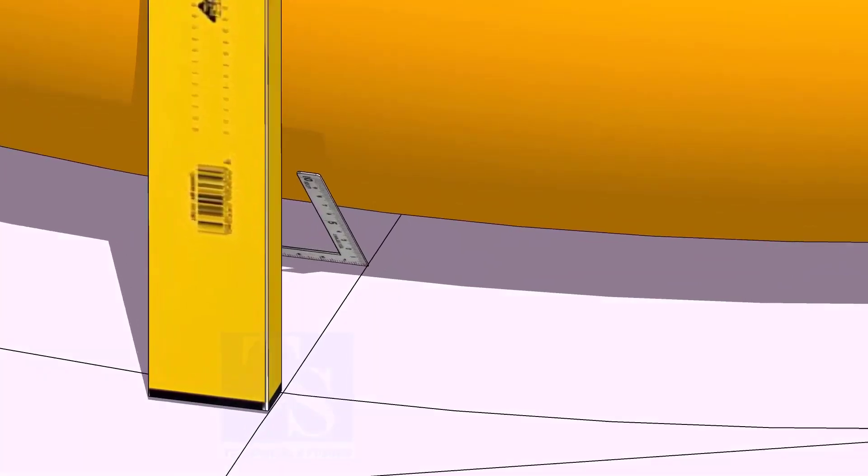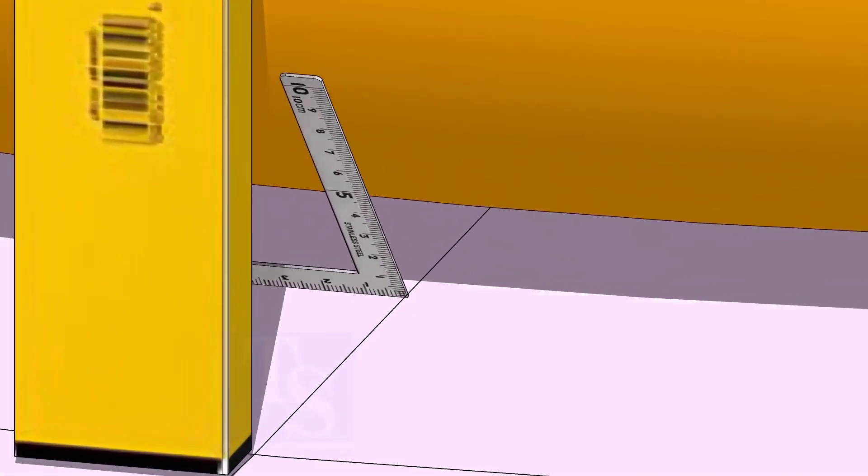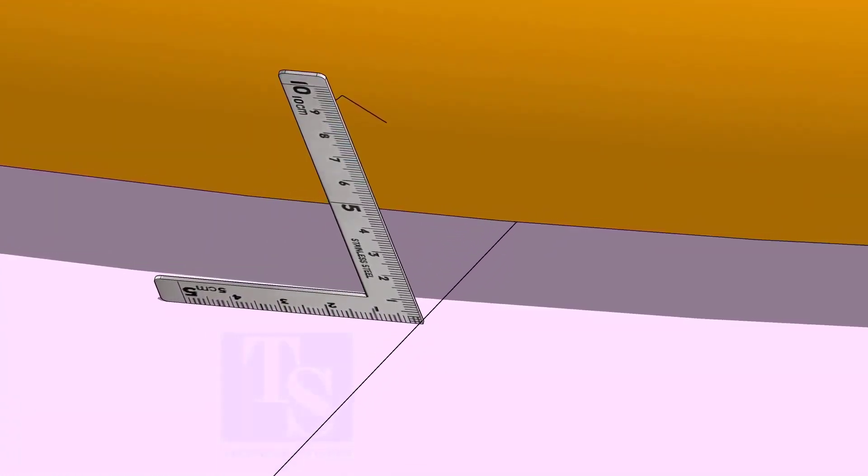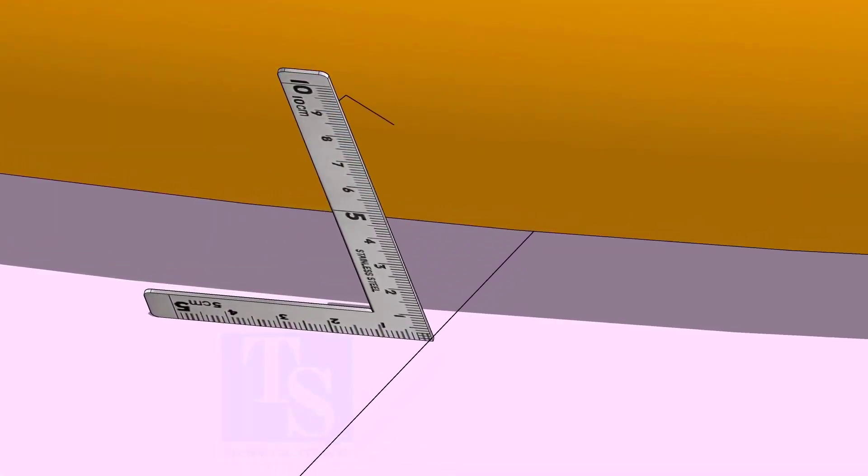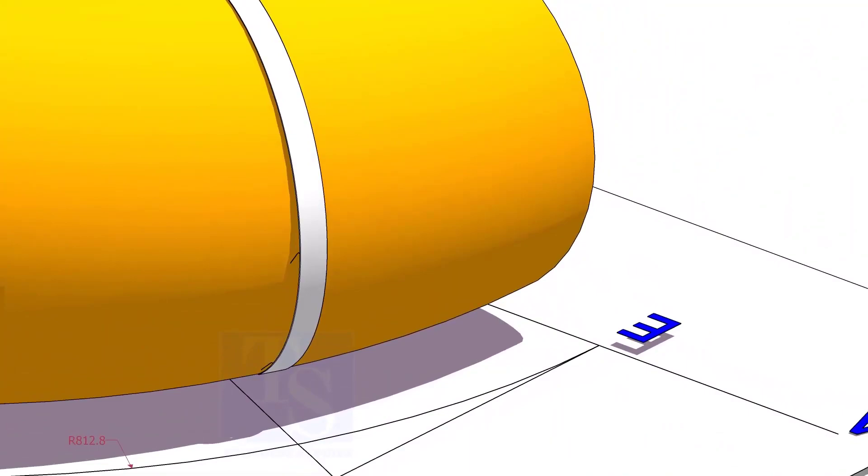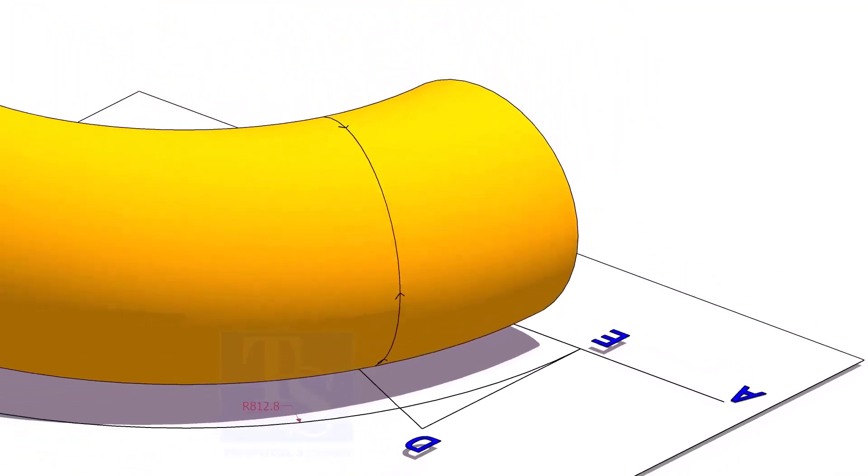At the bottom side, use a small right angle and transfer the line to the elbow on both sides. Use a bend scale and connect the marks to form a circle around the elbow.